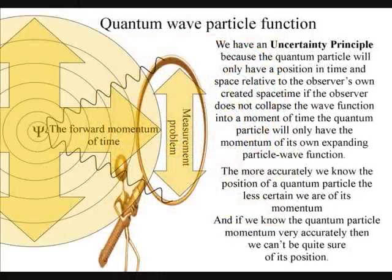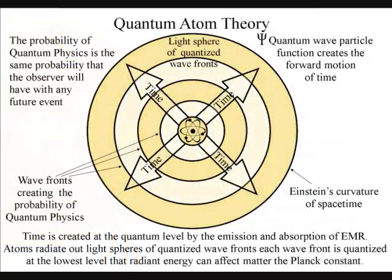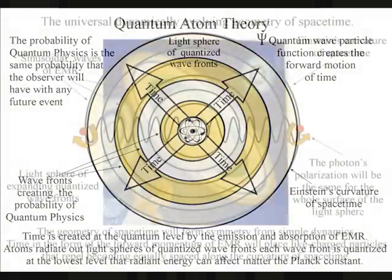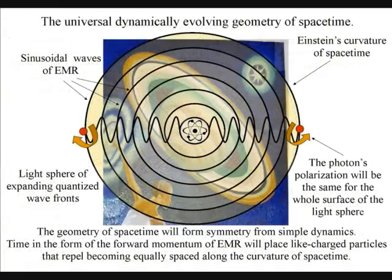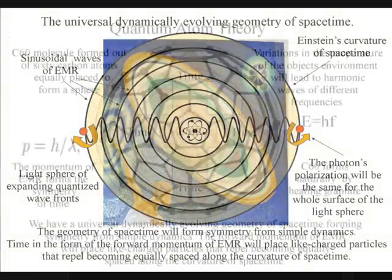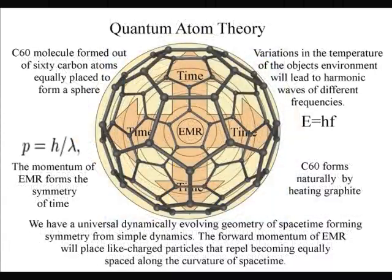We have a universal dynamically evolving geometry of space-time, forming symmetry from simple dynamics. The forward momentum of electromagnetic radiation will place light-charged particles that repel, becoming equally placed along the curvature of space-time.